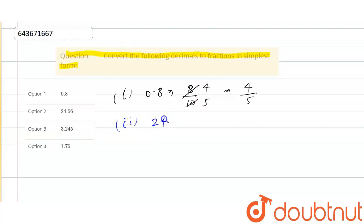The second number is 24.56. We can write it as 2456 by 100. If we cancel by 2, we get 1228 divided by 50. Then again by 2, it becomes 614 by 25. So this equals 614 by 25.